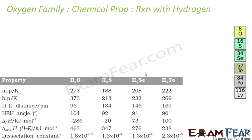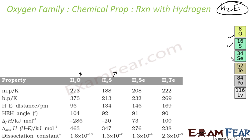We'll start with reaction with hydrogen. Typically, all elements of Group 16 form hydrides of the form H₂E. For example, with oxygen it forms H₂O, with sulfur it forms H₂S, with selenium it forms H₂Se, and with tellurium it forms H₂Te.